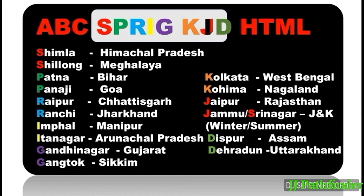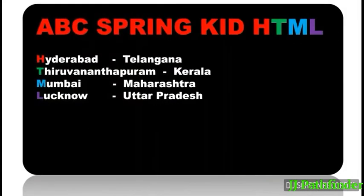Ranchi — Jharkhand, Imphal — Manipur, Itanagar — Arunachal Pradesh, Gandhinagar — Gujarat, Gangtok — Sikkim, Kolkata — West Bengal, Kohima — Nagaland, Jaipur — Rajasthan. Jammu and Kashmir: Jammu in winter and Srinagar in summer. Dispur — Assam, Dehradun — Uttarakhand.